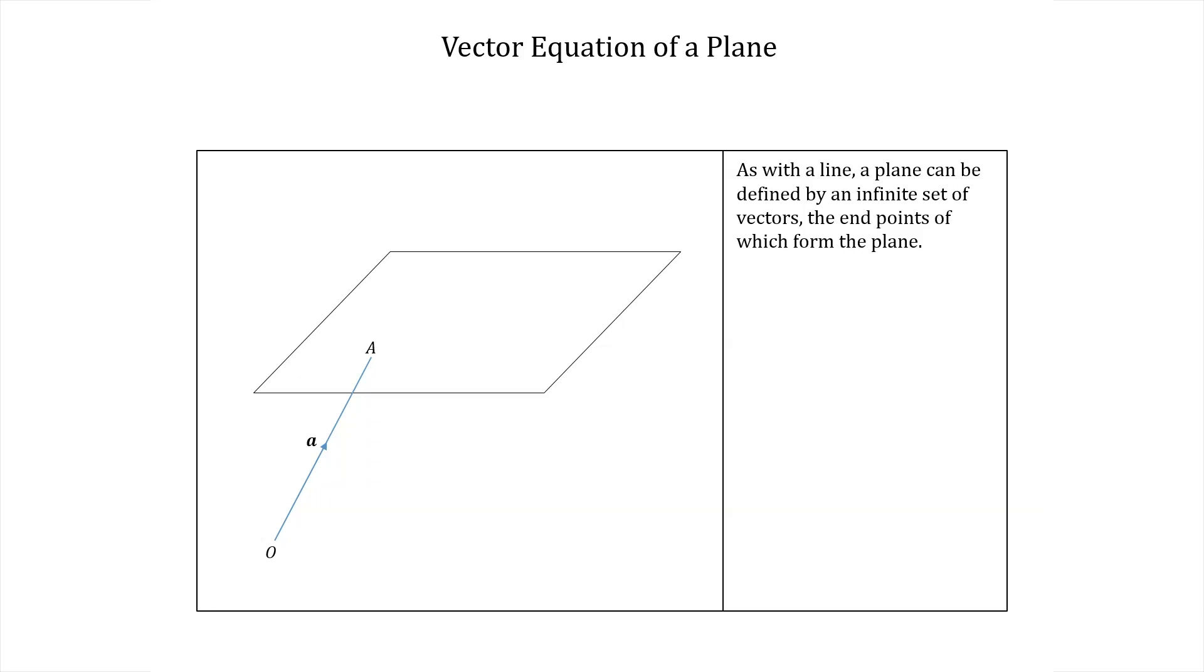We also need a normal vector to the plane. Recall that this means a vector that is perpendicular to the plane. Again, let's say we know such a vector, say this one here n. So n is coming out of the plane at a 90 degree angle.